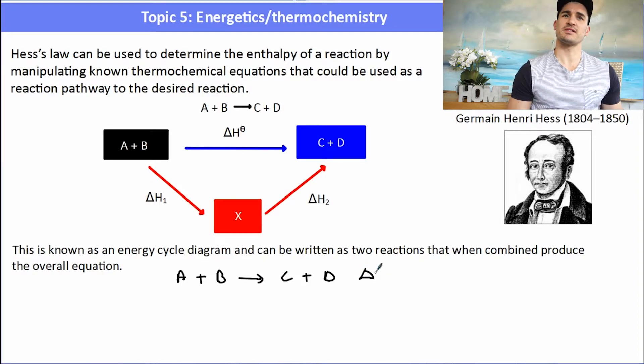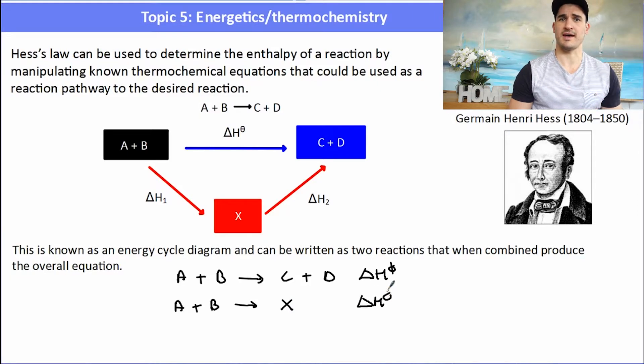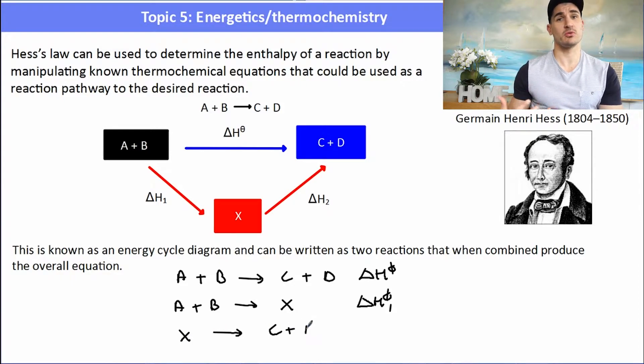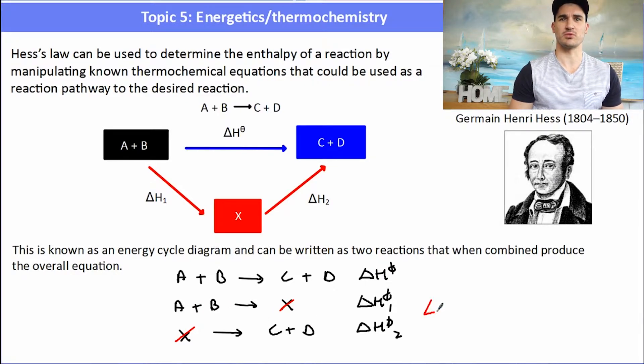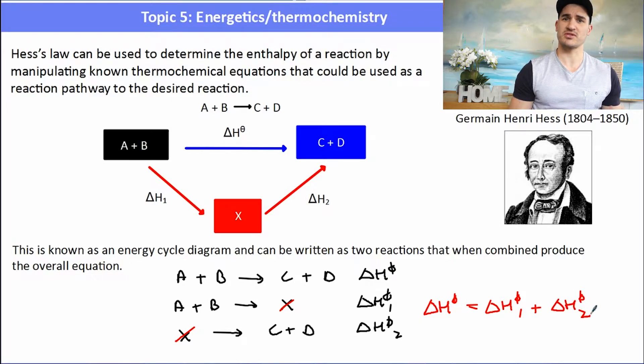So we can see that A plus B goes to C plus D is the delta H0. But maybe A plus B is a fundamental step where that would have delta H1. And then X could transform into C plus D which we would also know the enthalpy of. Now Hess's law says that A plus B goes to C plus D would simply be the addition of those two equations. And what would happen is the intermediate would cancel out. So the overall enthalpy would be the delta H1 plus the delta H2, the sum of the individual steps.